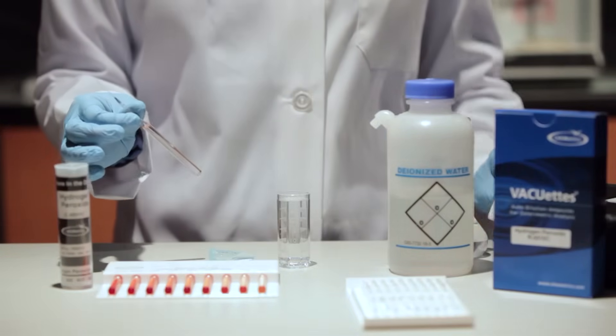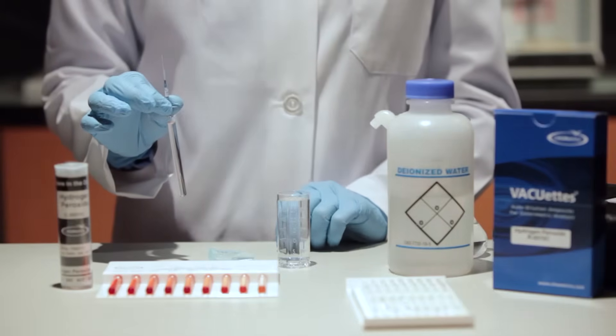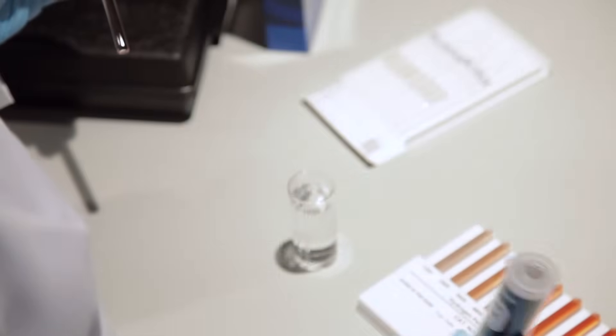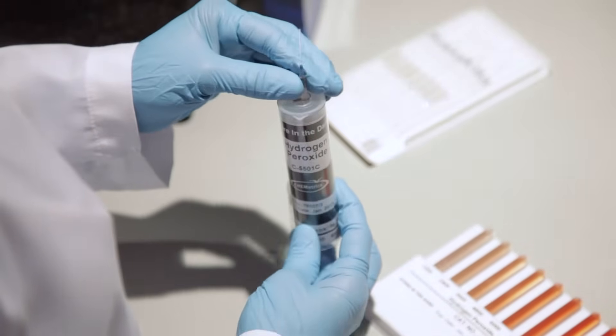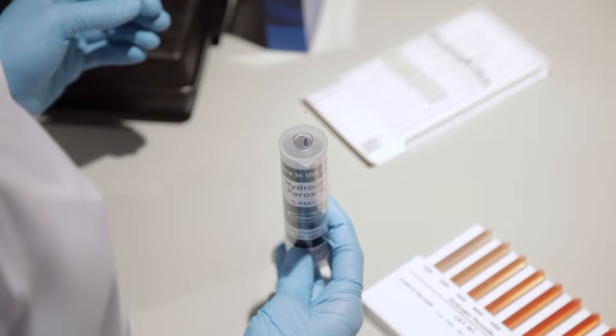The resulting color change can then be compared with the flat or round comparator to quantify results. For lower concentrations, use the round comparator by placing the ampule into the center tube of the comparator.